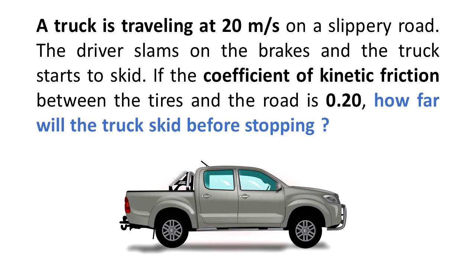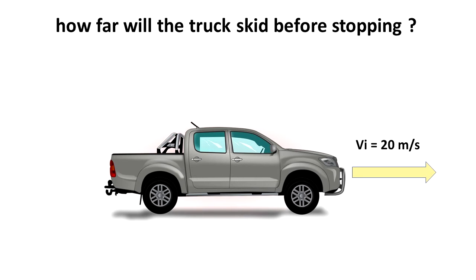So we will need to find the delta x, the stopping distance. In this picture, we see that the initial velocity is 20 meters per second to the right. But when the wheels are locked, the kinetic friction force is in the opposite direction. So this unbalanced force is going to decrease the velocity of this truck until it gets to zero because this truck is going to stop.